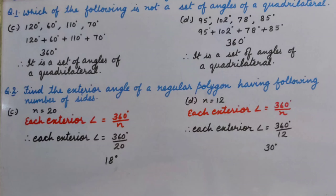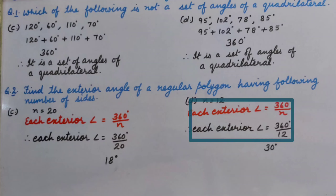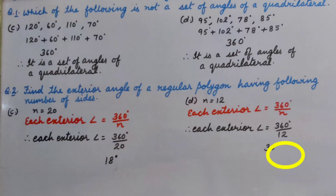Similarly, Part D: sides are 12. So each exterior angle equals 360 degrees divided by 12, that is 30 degrees.